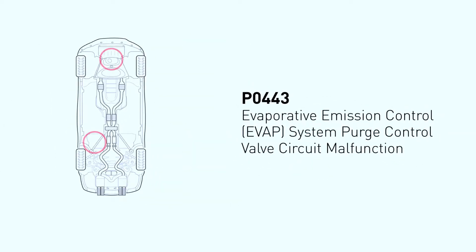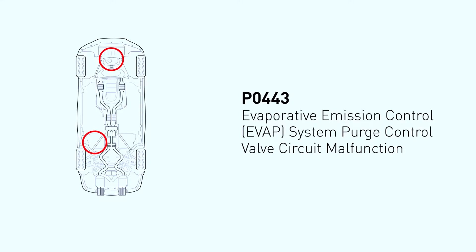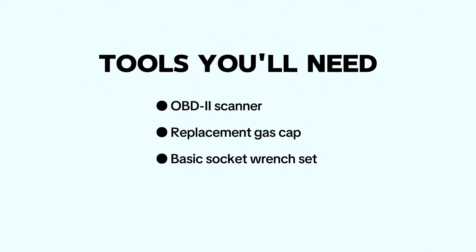Trouble code P0443 stands for evaporative emission system purge control valve A circuit, and it indicates a problem with the EVAP system purge valve or control circuit. Common problems that can trigger this code include bad purge valves, problems with the purge valve circuit, and issues with the PCM.